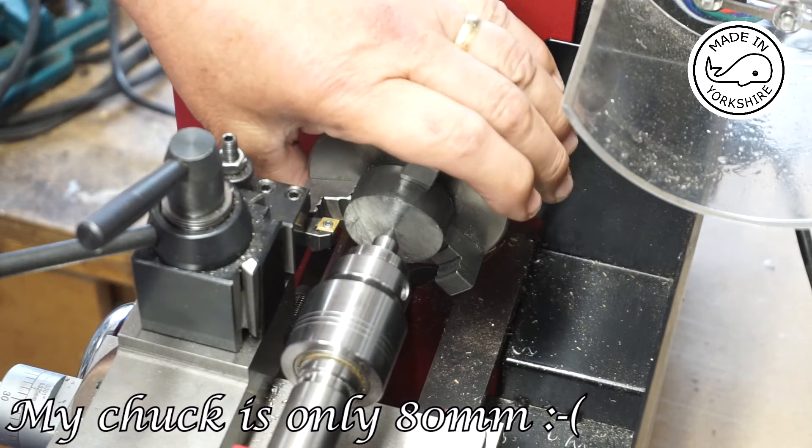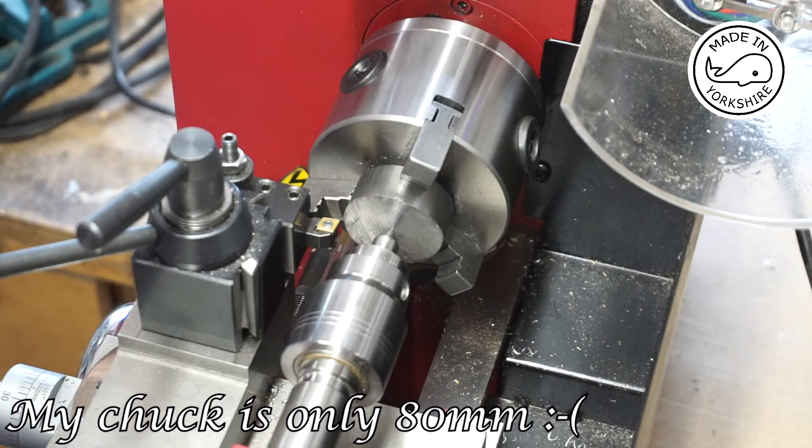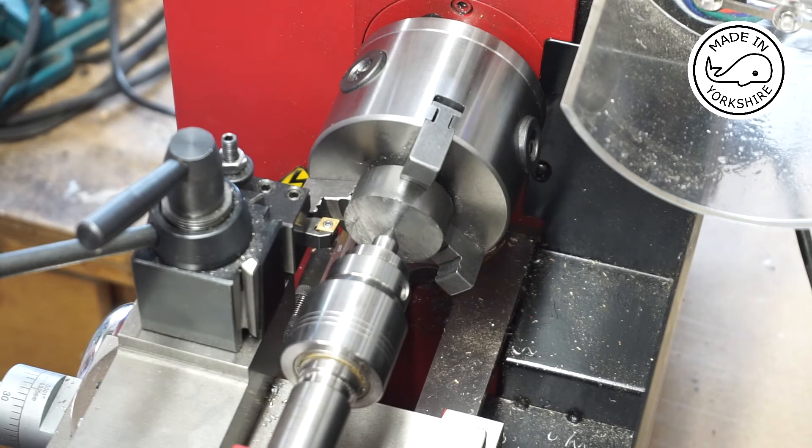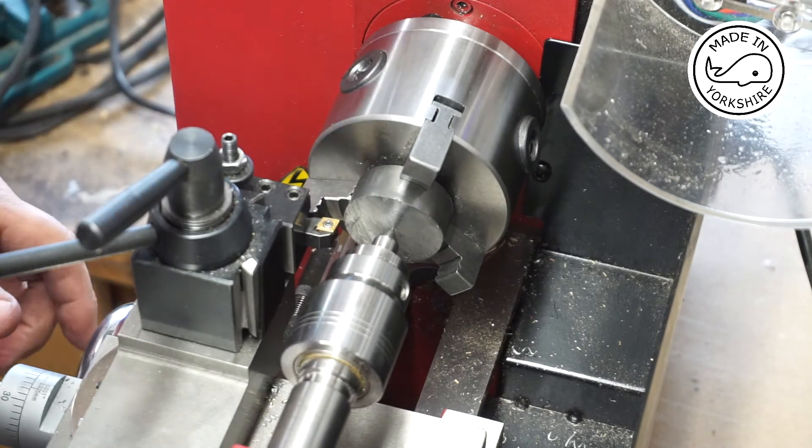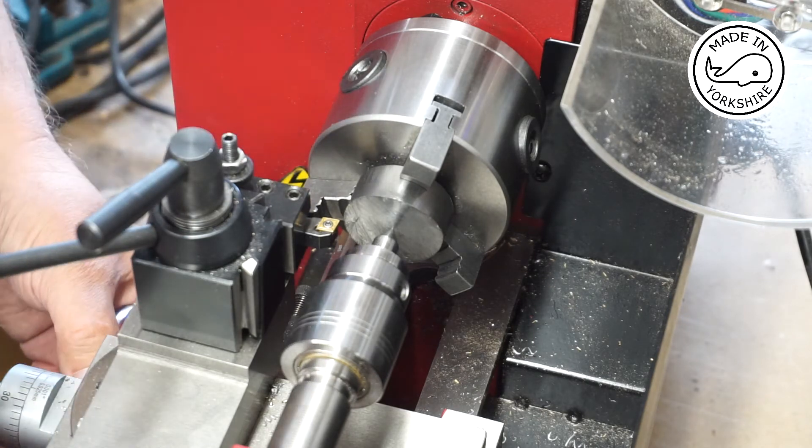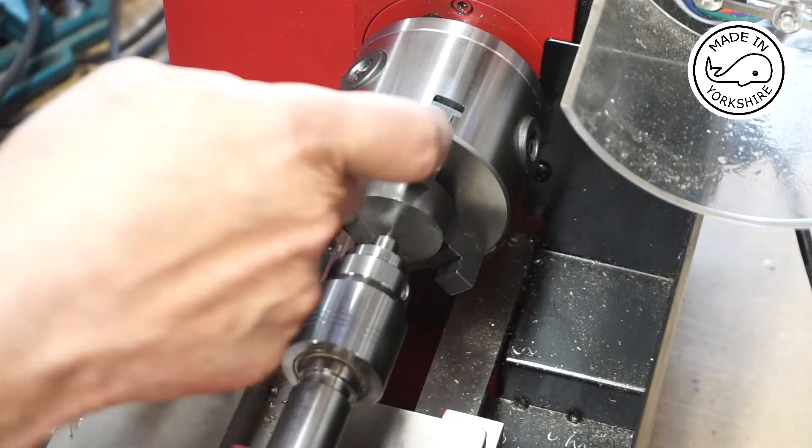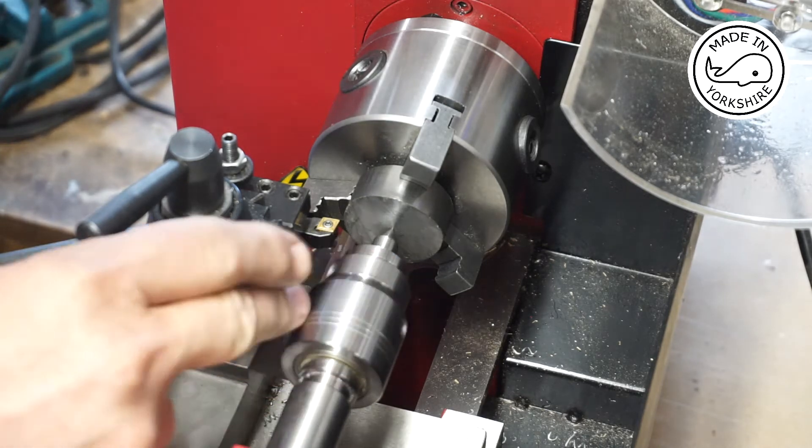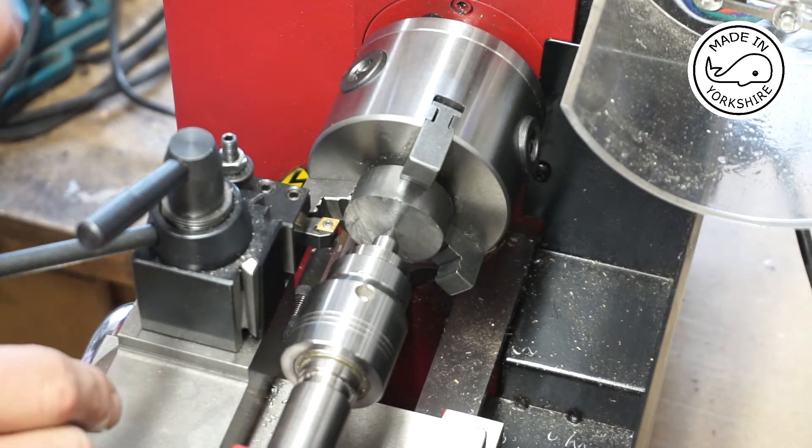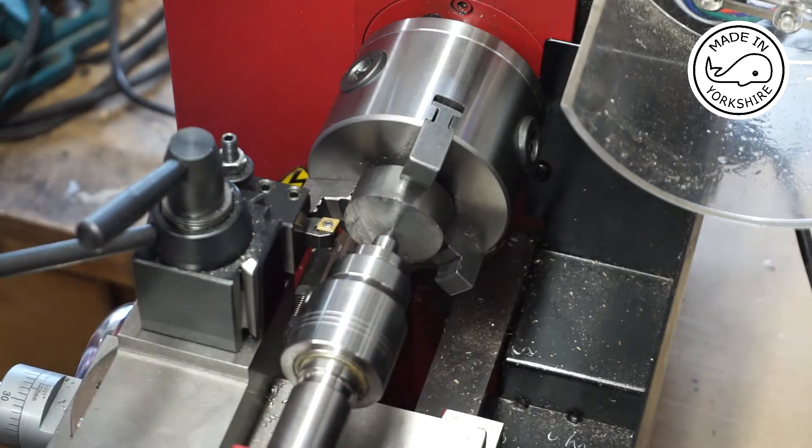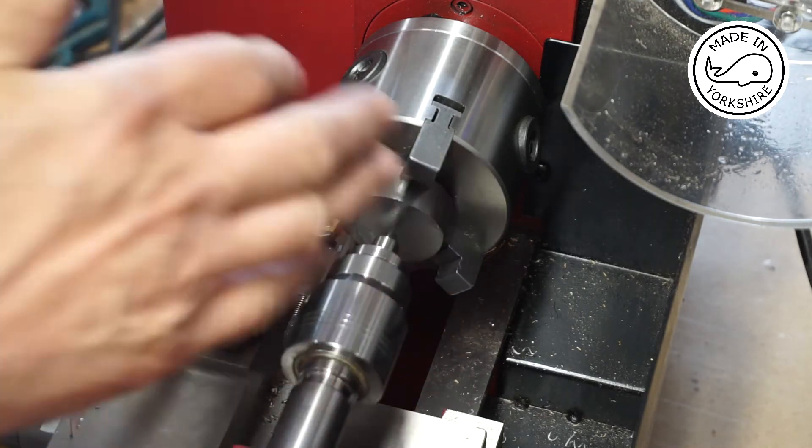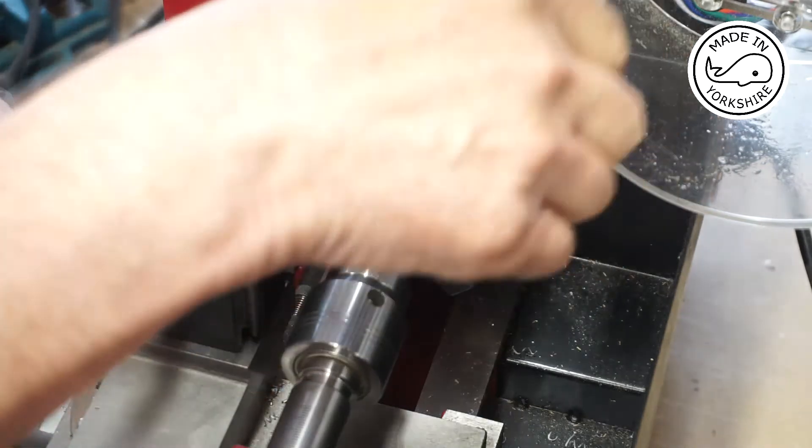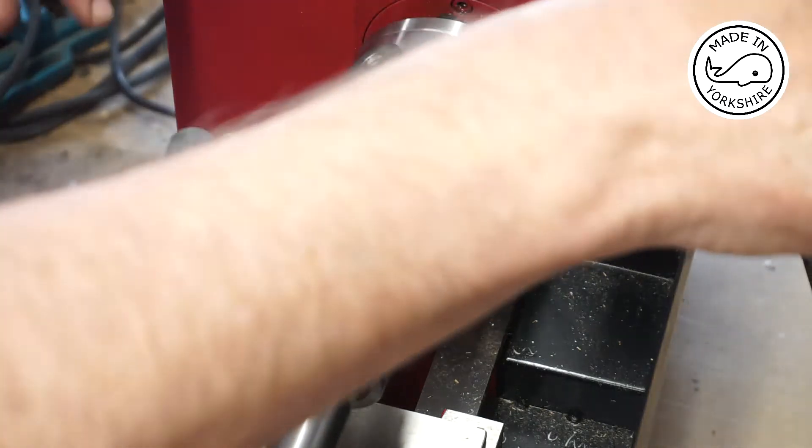We're sort of in big twixt in between really, it won't fit in the outside of these jaws so I've had to go right on the inside. My tool here is very very close to the jaws so I don't want the tool to crash into the jaws but I need to face this off. I've also got a live center off my woodworking lathe here which is an MT2 just to offer a little bit of extra support. I'm going to have to take this very very steady.